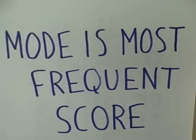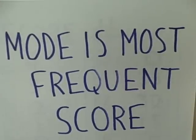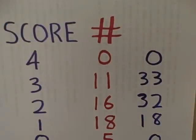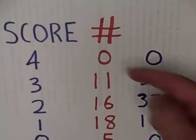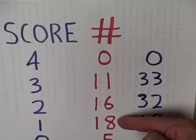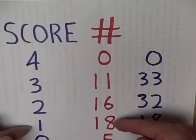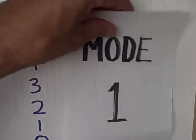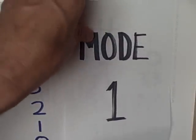Another measure of central tendency is the mode, and the mode is the most frequent score. With these kinds of data arranged in a table, we just look at what score was the most frequent. Oh, this one right here where 18 students scored a 1. We therefore have a mode of 1.